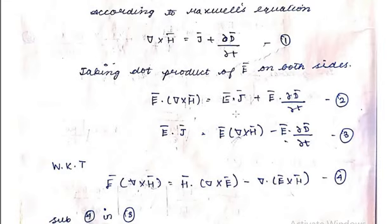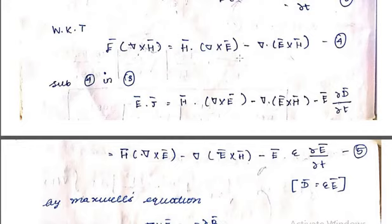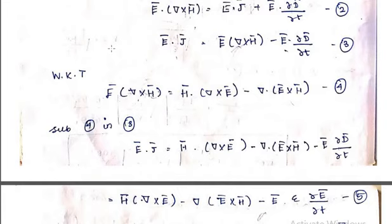Taking the dot product of E on both sides gives: E · (∇ × H) = E · J + E · ∂D/∂t. Rearranging: E · J = E · (∇ × H) − E · ∂D/∂t. We know that E · (∇ × H) can be written as H · (∇ × E) − ∇ · (E × H). Substitute this identity into the equation.